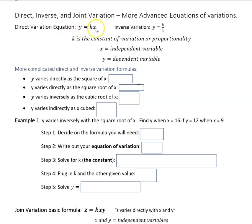Direct variation equation is y equals kx, and inverse is y equals k over x, where k is the constant of variation, sometimes known as the constant of proportionality, and then x is the independent variable, meaning it's the thing that's going up and down that causes y to change.